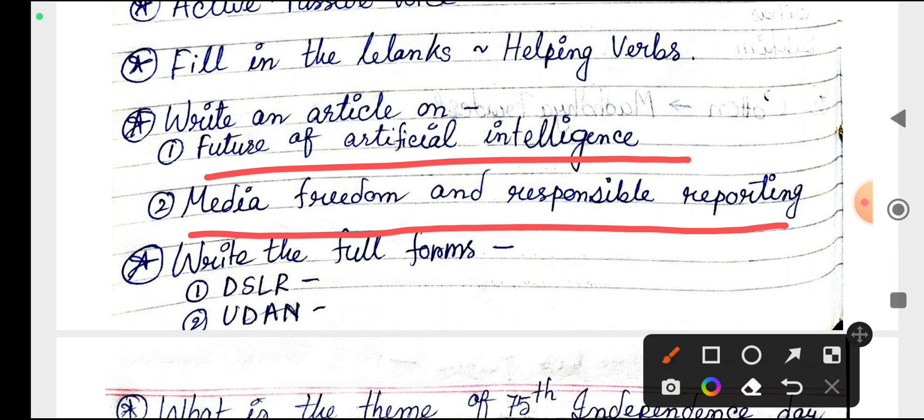Write the full forms. DSLR was asked, whose full form is Digital Single Lens Reflex. And UDAN, whose full form is Ude Desh Ka Aam Naagrik, meaning common citizens of the nation. It aims to develop smaller regional airports to allow common citizens easier access.